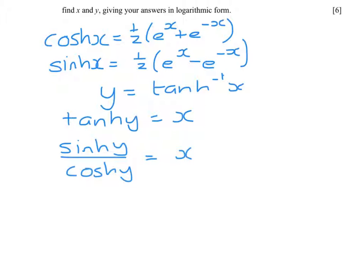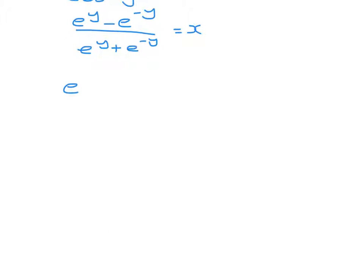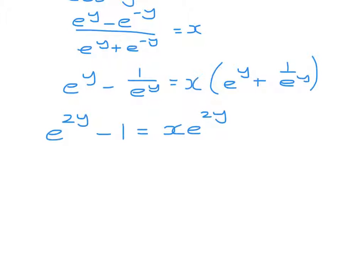Substituting in, the halves will cancel, and we have e to the y minus e to the minus y, all over e to the y plus e to the minus y. So e to the y minus 1 over e to the y equals x upon e to the y plus 1 over e to the y. So I want to multiply everything by e to the y. e to the 2y minus 1 equals x e to the 2y plus x.